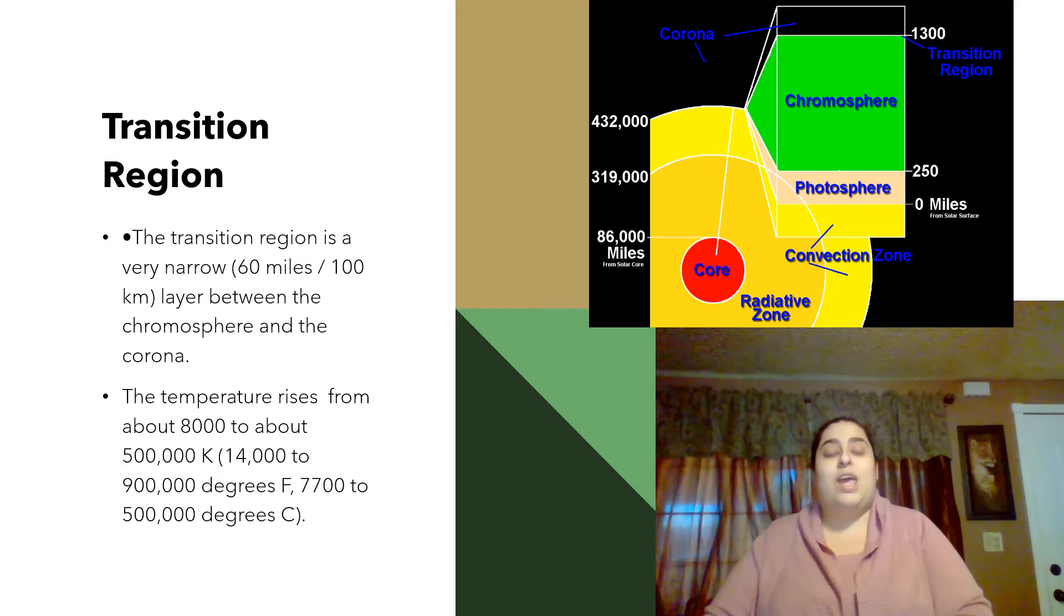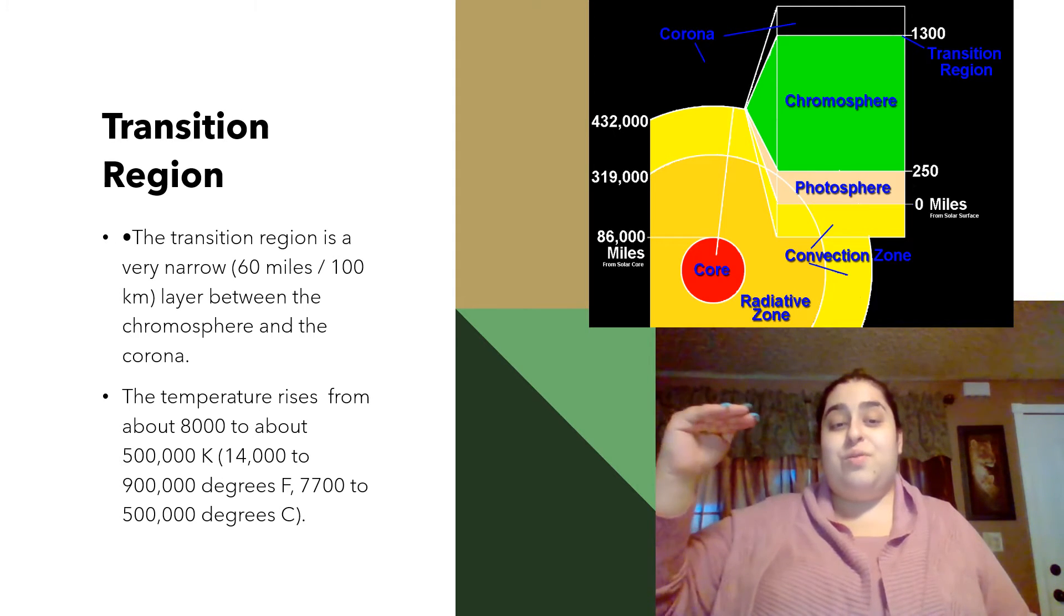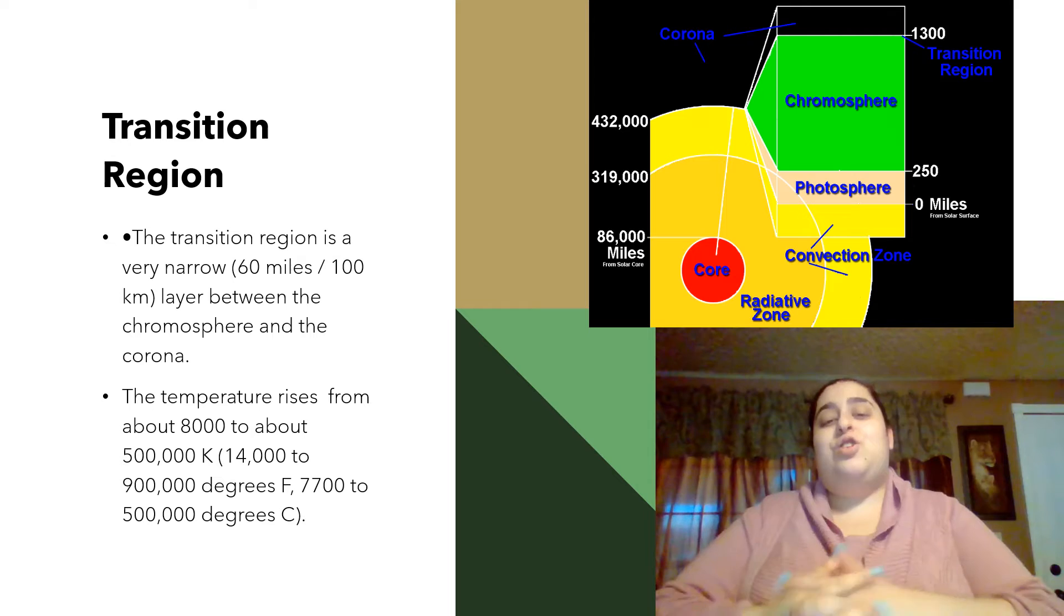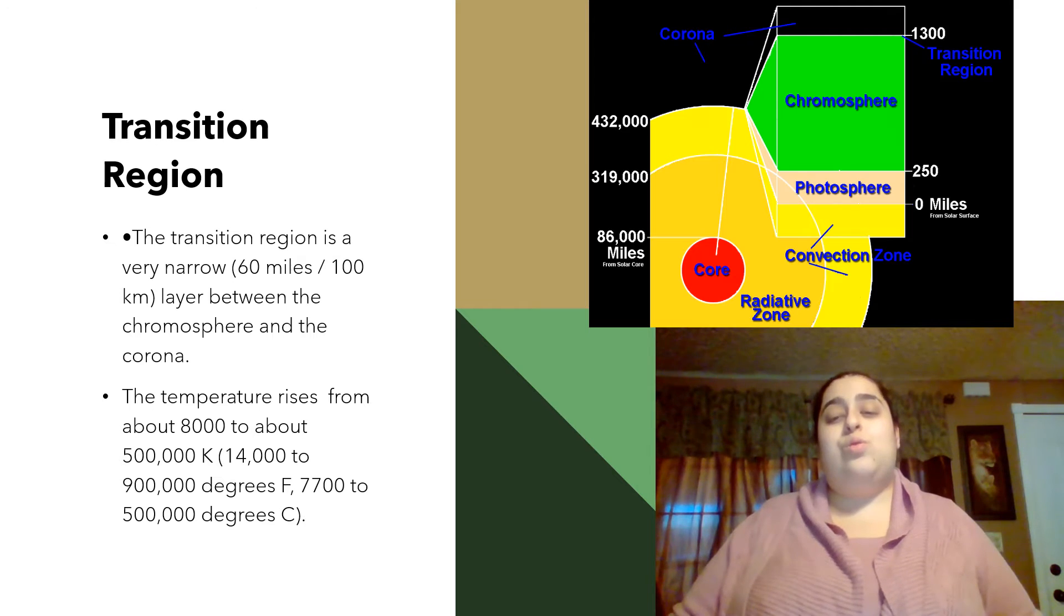The next one is the transition region. This one is very narrow. It is about 60 miles. The layer between the chromosphere and the corona. The temperature here rises from about 8,000 to about 500,000 degrees. So that is very hot.